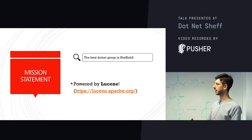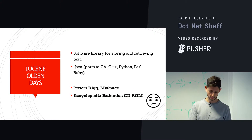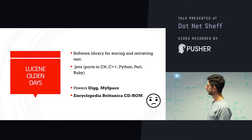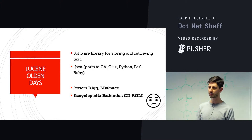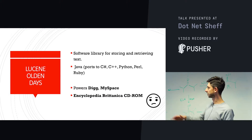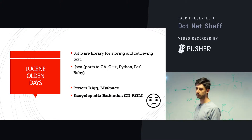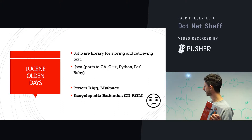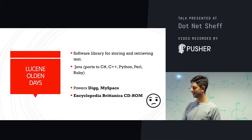I'm going to explain how something like Elasticsearch would use Lucene to index documents and then run queries. Lucene's been around since about 2000, it's written in Java, it's now part of the Apache Foundation, and it's been ported to everything like C-sharp, C++. The .NET port, Lucene.NET, is really stable now. According to my book that's a little out of date, it powers Digg and Myspace, and most impressively the Encyclopedia Britannica CD-ROM.